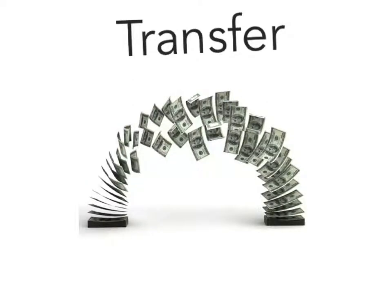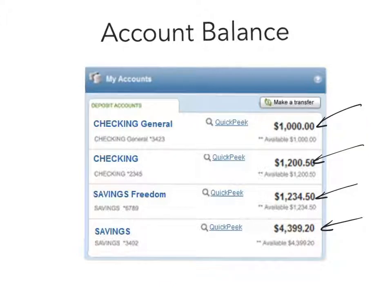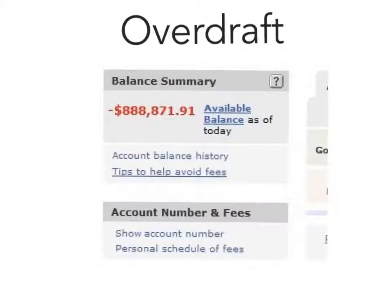A transfer is moving money from one account to another. An account balance, as you can see, is what is currently available to you — how much money do they currently have. An overdraft is taking too much money out of your account, which leaves you in the negative, which is not a good thing.